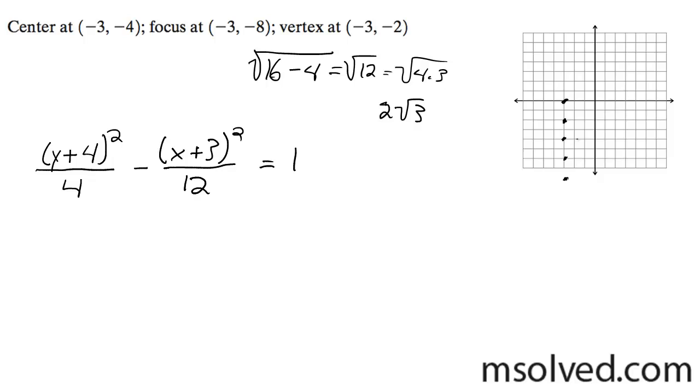So we'll graph this. Two root three is roughly 3.5, so right about there.